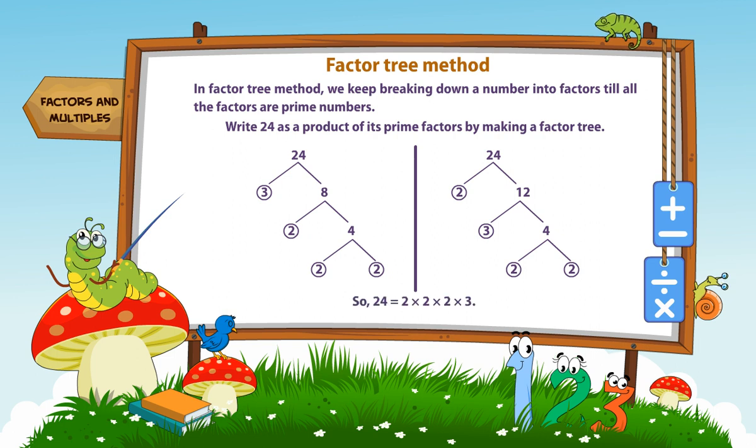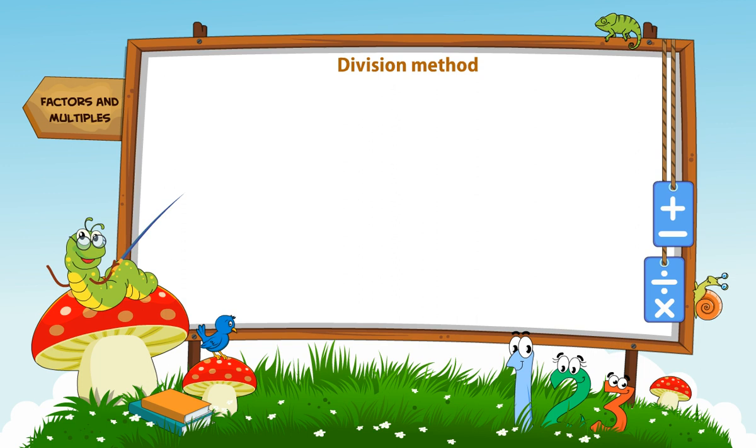So, 24 is equal to 2 × 2 × 2 × 3. Division Method.